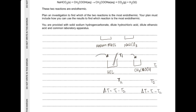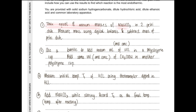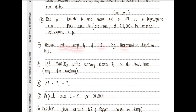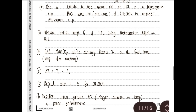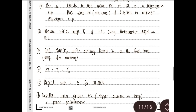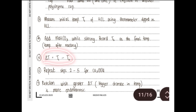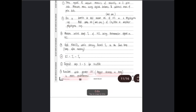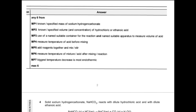To write this up: take equal and known masses of NaHCO₃ in two petri dishes, measuring mass using a digital balance and subtracting the petri dish mass. Using a burette, add a known volume and concentration of hydrochloric acid into a polystyrene cup and the same volume and concentration of ethanoic acid into another. Measure initial temperature t1 using a thermometer, then add NaHCO₃ while stirring and record t2 as the lowest temperature. Repeat steps for both acids. The reaction with the greater ΔT (t1 − t2) is more endothermic.